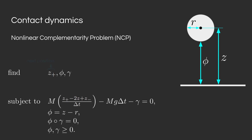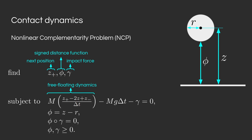We want to find z-plus, the position of the sphere at the next time step, phi, the signed distance function, and gamma, the impact force. Those quantities have to respect a few constraints. The first constraint contains the free-floating dynamics of the sphere. z is the position of the sphere at the current time step, and z-minus is the position at the previous time step. We also have a gravity term and factor in the impact force.